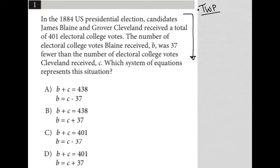The first sentence says in the 1884 U.S. presidential election, candidates James Blaine and Grover Cleveland received a total of 401 electoral college votes. OK, so that makes sense to me.